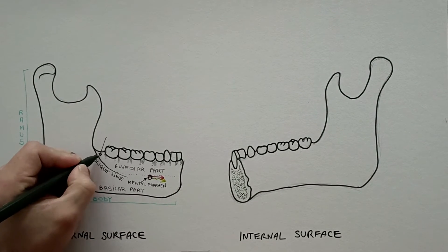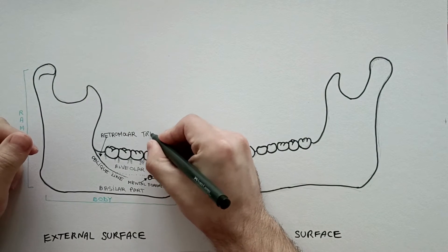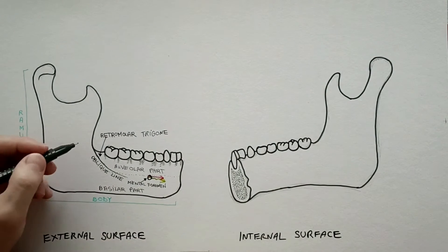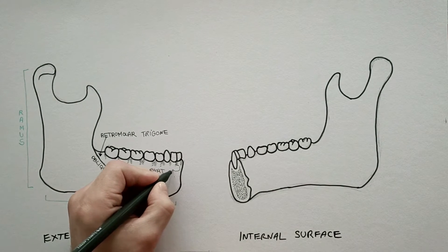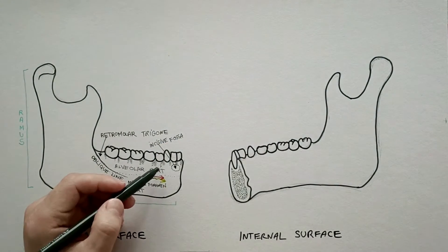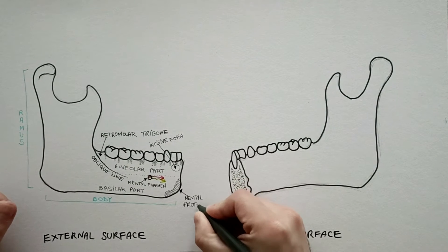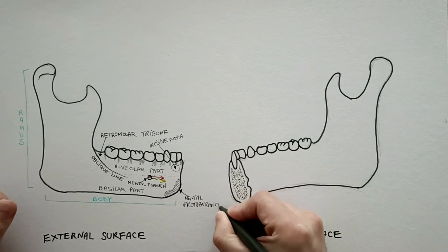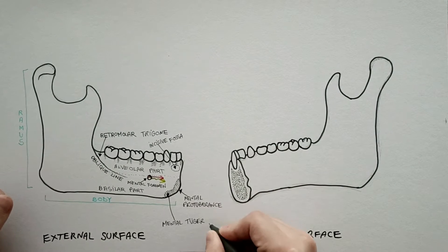The retromolar trigon is the area located behind the last molar and medial to the beginning of the oblique line. Below the incisors is a slight depression called the incisive fossa of mandible. The mental protuberance is a triangular eminence at the base of the corpus in the anterior symphysial region. Its lateral parts are called mental tubercles.